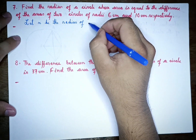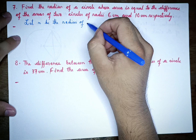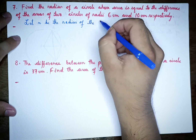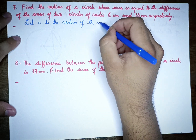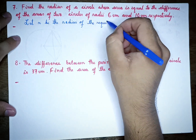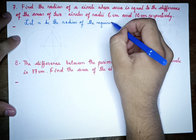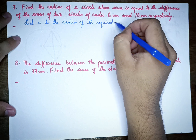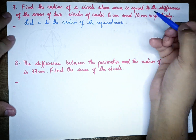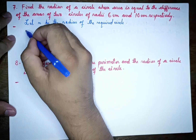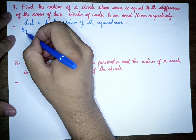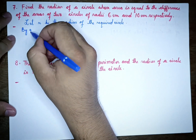Let r be the radius of the required circle. By the question, the area of the required circle is equal to the difference of the areas of the two given circles.